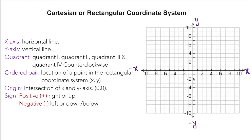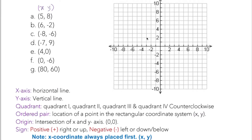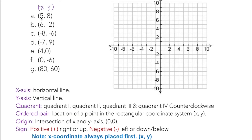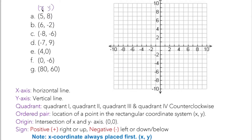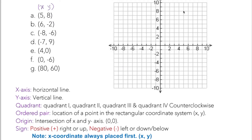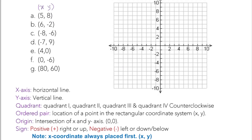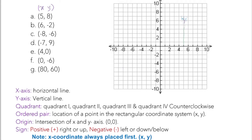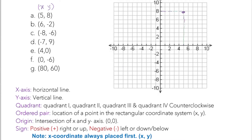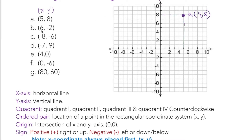Now we're going to plot some points in this rectangular coordinate system. We have a set of points here. For point A at (5, 8) — x always comes first, so x is 5, go 5 to the right. Then y goes up 8, because both are positive. So look at x equals 5 and go up 8 — that is the point A at (5, 8).